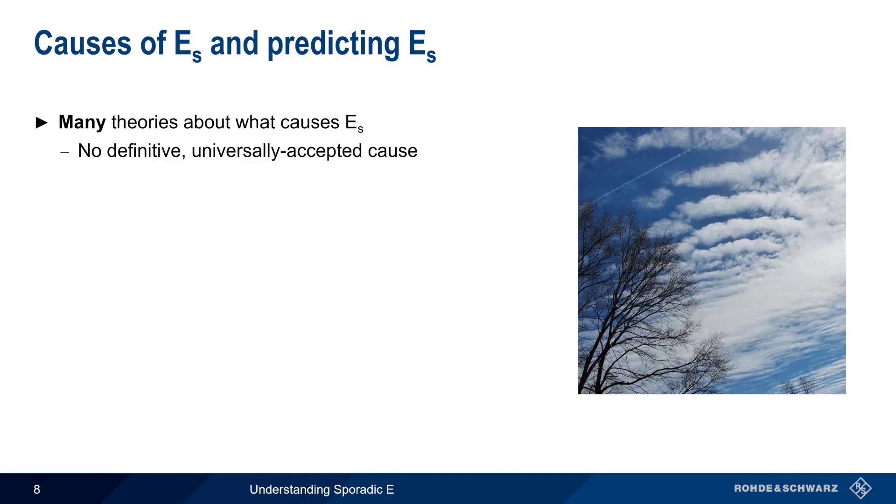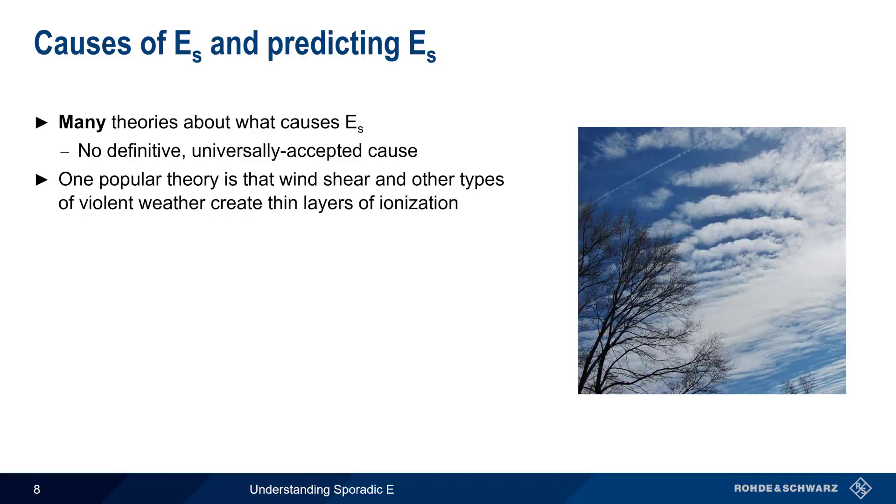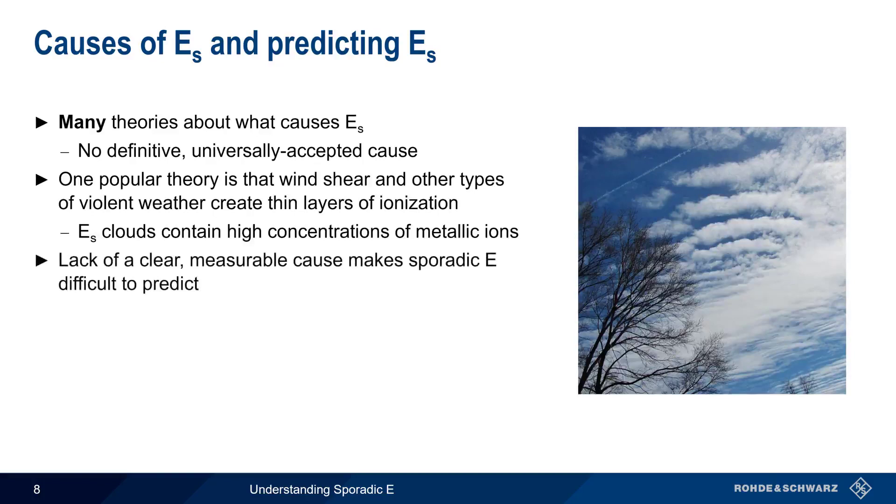One of the more popular theories is that wind shear, or other types of violent weather, create thin layers of E layer ionization. Experiments have shown that sporadic E clouds contain high concentrations of metallic ions. However, the lack of a clear, measurable cause makes sporadic E difficult to predict.